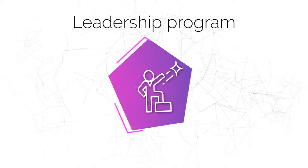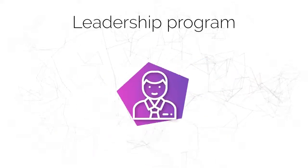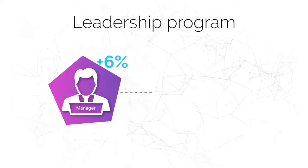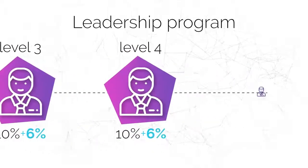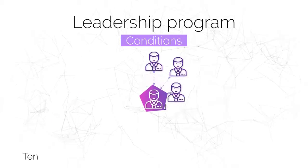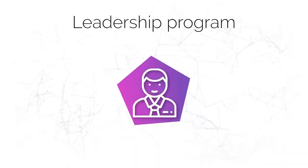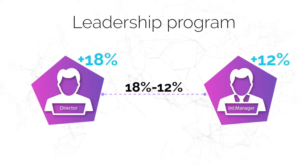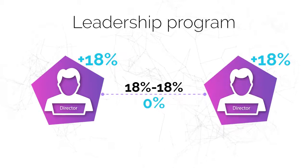Leadership Program: the company has six rankings, and your leadership bonuses increase with your ranking. When you reach the manager rank, you start receiving an additional 6% of the income of your partners — 100% plus 6% from the second to the tenth level, and 10% plus 6% from the eleventh level onwards. Conditions for the 6%: 10 personally invited investors and a team turnover of $150,000. If you have the rank of director and a partner in your structure has the rank of international manager, you get the difference between your and their bonuses, which is 6%. If you and your partner have the same rank, you do not get a bonus.